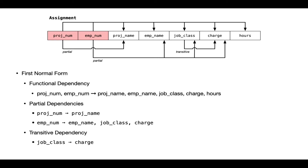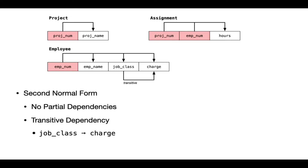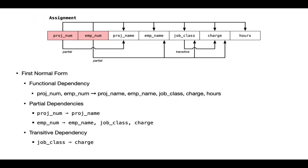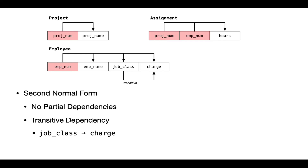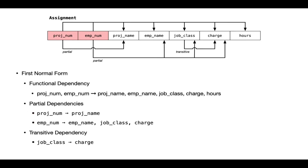So we've got a first normal form with the functional dependencies shown. The next step is to get from first normal form to second normal form by eliminating partial dependencies. Instead of having the assignment relation with all these fields, we're going to get rid of all the connections except for the number of hours. The combination of project number and employee number determines the number of hours that employee put in on that project. The other partial dependencies are a clear signal that we should move those relationships out into second normal form, using the determinant as the key in a new relation and bringing along the non-prime attributes.